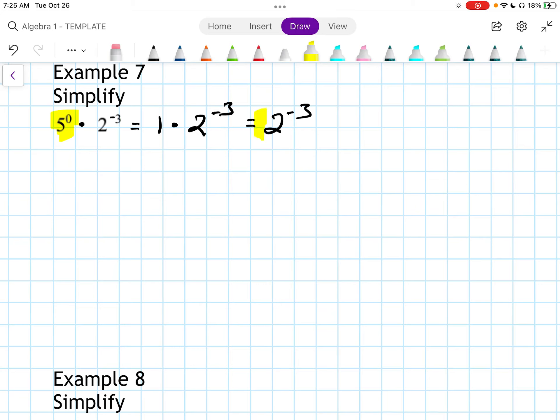On homework and stuff, if you have something to the 0, it can just go away whenever it's in a fraction like this. 2 to the negative 3rd would be 1 over 2 to the 3rd, and 2 to the 3rd is 8, so this would be 1 over 8.